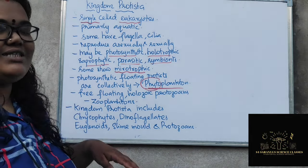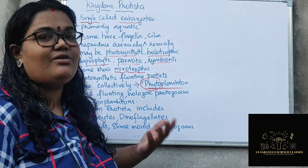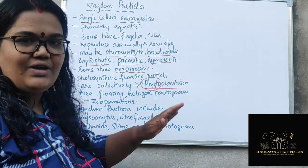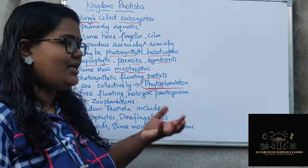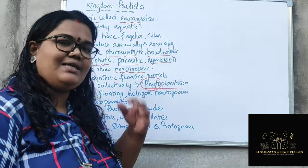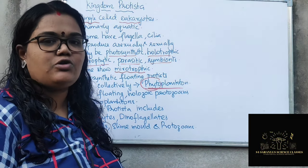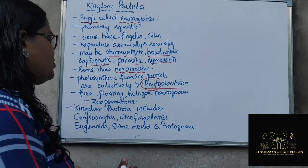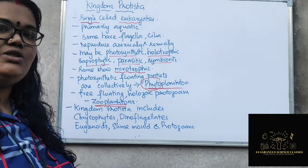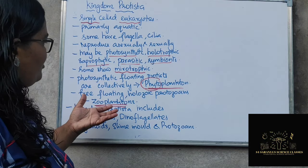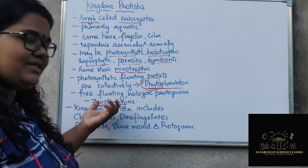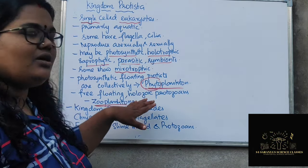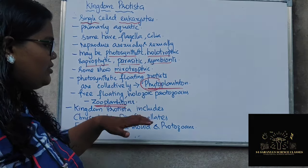The free-floating holozoic protists, which follow the holozoic mode of nutrition similar to animals, are heterotrophic in nature. They are also free-floating but do not produce their own food — instead, they engulf food particles and digest them. These free-floating holozoic protists are known as zooplanktons. So phytoplanktons are photosynthetic and zooplanktons are holozoic.